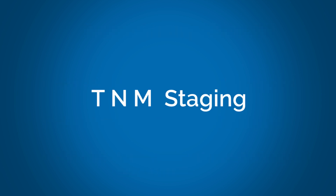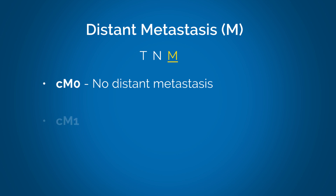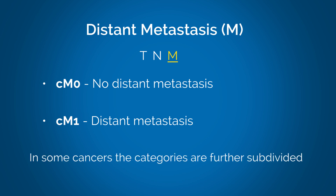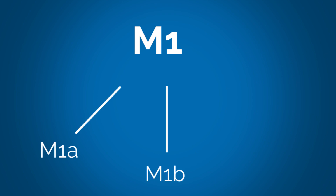Distant metastases — M. When assigning a clinical classification to the absence or presence of distant metastases, the following combinations of letters and numbers are used: cM0 means there is no distant metastases; cM1 means there is distant metastases. In some cancers, the categories are further subdivided. For example, in rectal cancer, M1 can be subdivided into M1a, M1b, and M1c, depending on where the metastases are and how many are found.